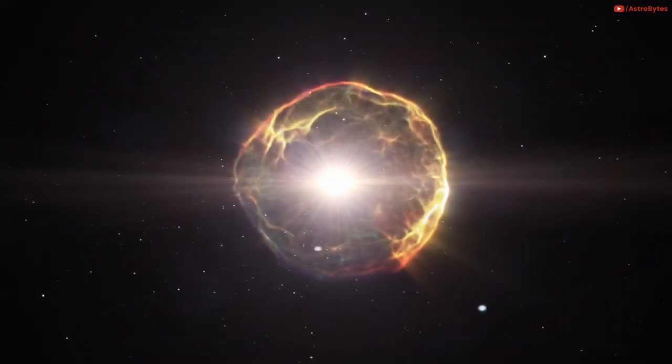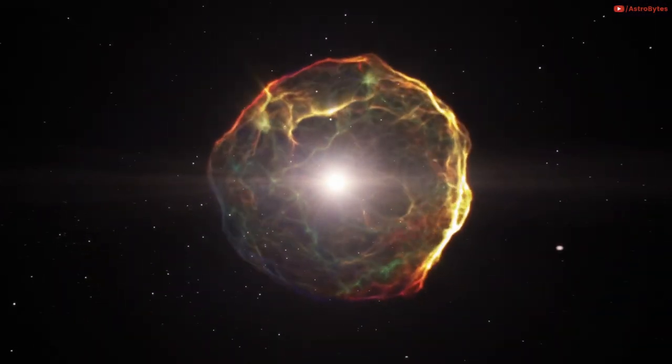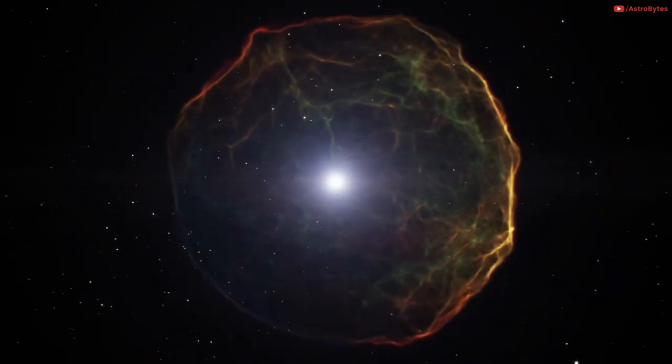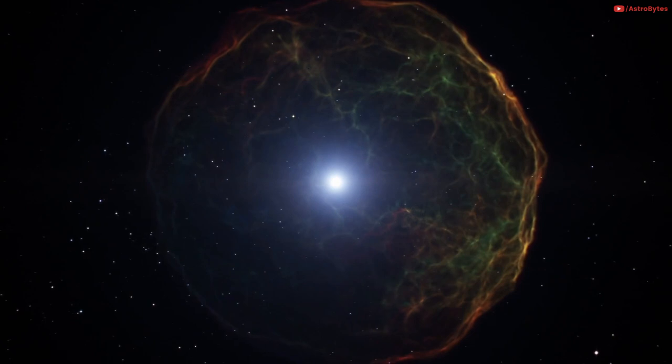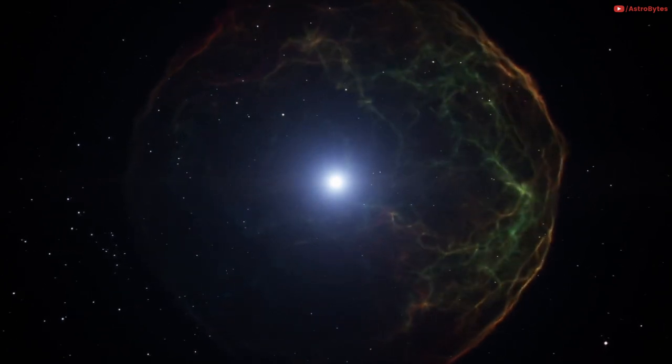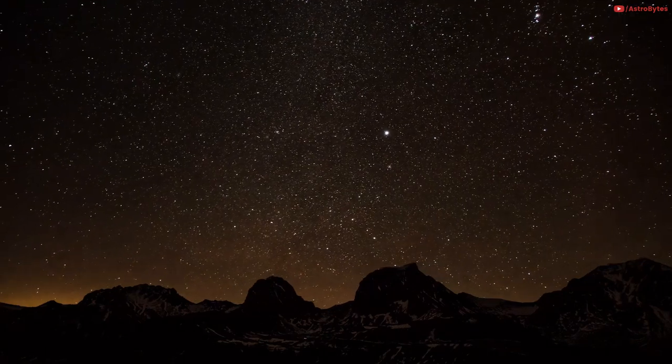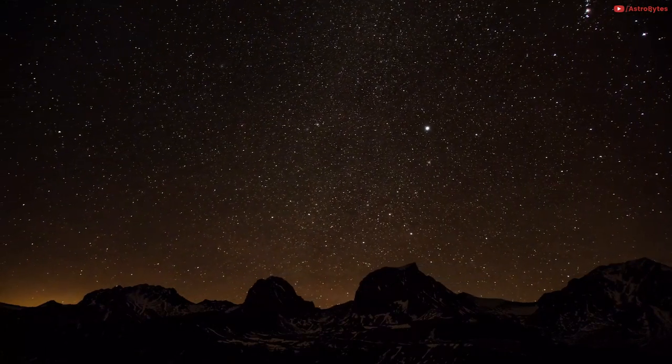This is because when a massive star runs out of material in its core, the star will collapse under its own gravity and turn into a supernova. Researchers have estimated that this will likely happen to Betelgeuse within the next 100,000 years, which is relatively soon in astronomical terms. This explosion will create a burst capable of briefly outshining an entire galaxy.